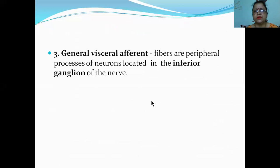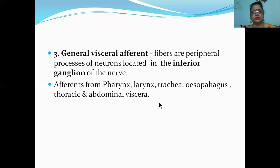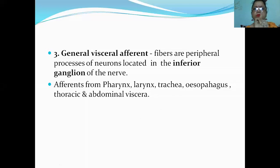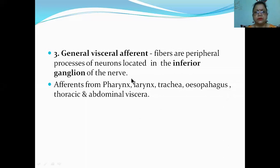General visceral afferent fibers are peripheral processes of neurons located in the inferior ganglion of the nerve. These afferents come from the pharynx, larynx, trachea, esophagus, thoracic and abdominal viscera - that means almost everything. That's why it is the vagus nerve - vagus, meaning everything.